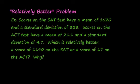Z-scores can be used to help us determine which of two outcomes is relatively better. Here's an example. Scores on the SAT test have a mean of 1520 and a standard deviation of 323. Scores on the ACT test have a mean of 21.1 and a standard deviation of 4.7. Which is relatively better: a score of 1190 on the SAT or a score of 17 on the ACT, and why?